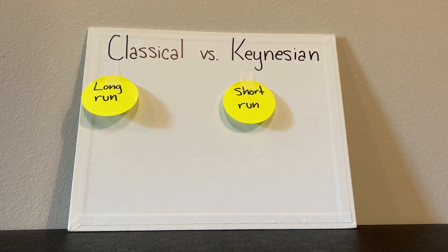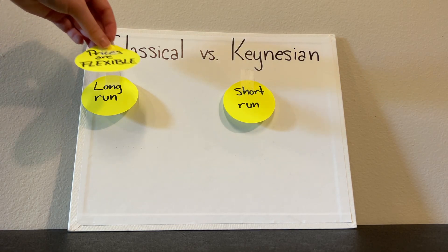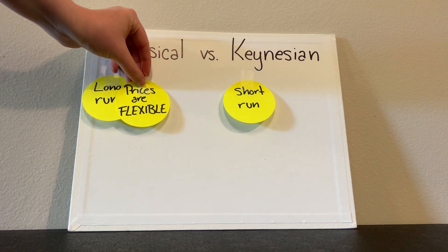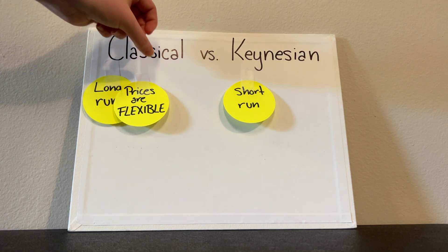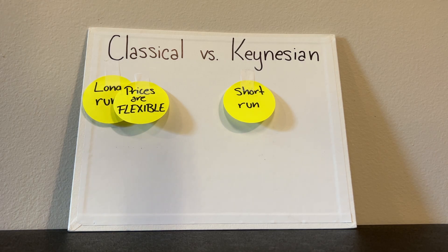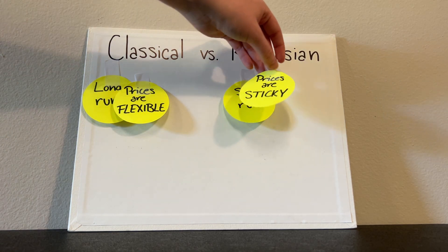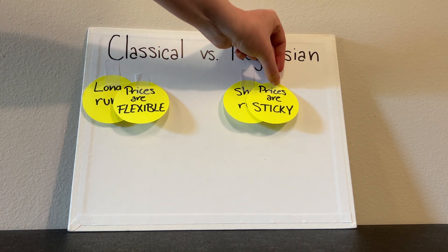Price flexibility for classical economics — they believe that prices are flexible, whereas Keynesian, they believe that prices are sticky.